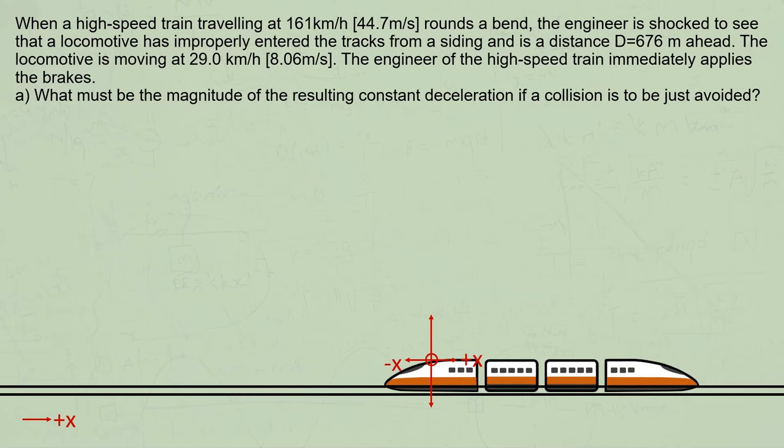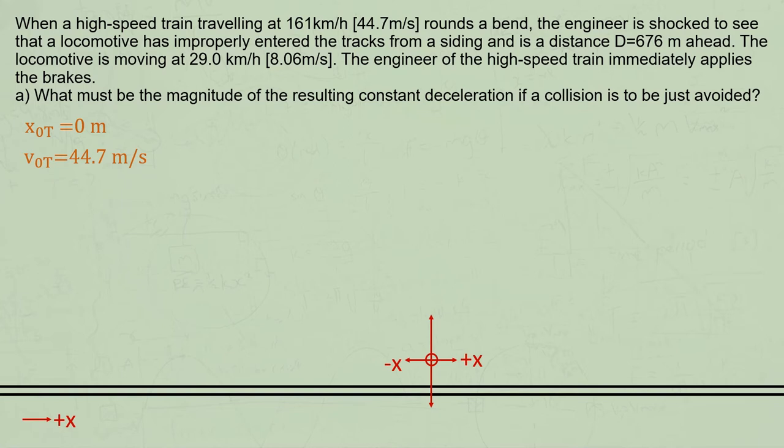Let's see what we have for the train, which I'll show with a subscript t and orange text. X naught t is zero because of where we just placed the origin. Its initial velocity is 44.7 meters per second, and if a collision is to be avoided, its final velocity must be the same as the locomotive.